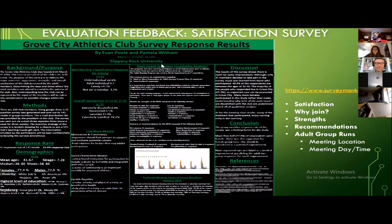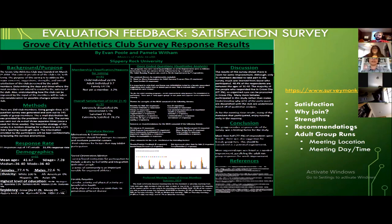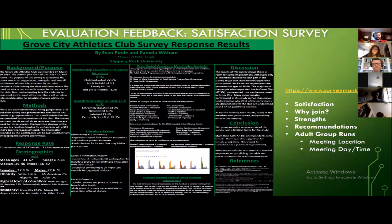For feedback, we use Survey Monkey, similar to the public health planning and evaluation process. We ask questions about how satisfied members are with the club, why they joined, what they think are the club's strengths and weaknesses, recommendations for improvement, and for group runs, what the best meeting location, day, and time would be. This is a real-world use case for Survey Monkey, Qualtrics, or other online survey systems — you might also use a survey to gather parent preferences for an after-school physical education or fitness activity program.